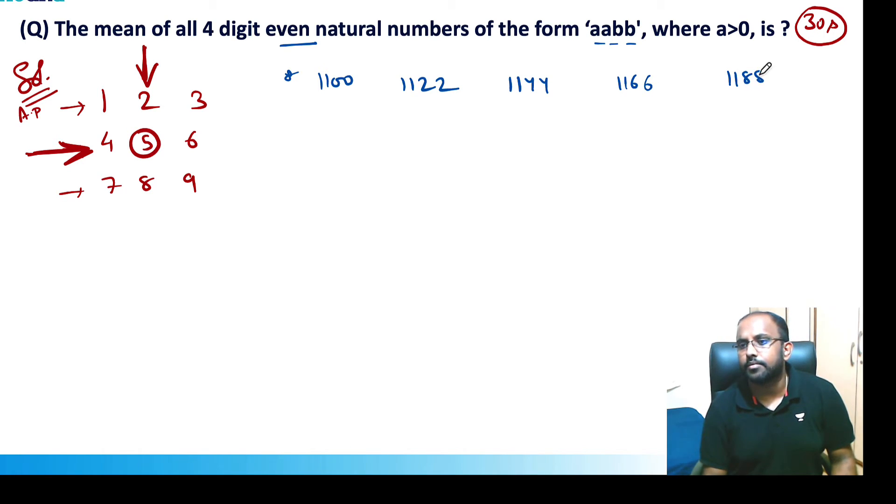Then the next row: 2200, 2222—I can take 2222 because it doesn't mention that a and b are distinct—2244, 2266, and 2288. Like that it will go on till 9900, 9922, 9924, and this will go on till 9988.